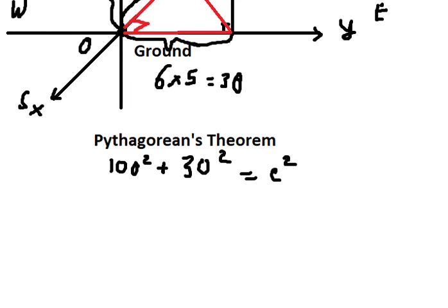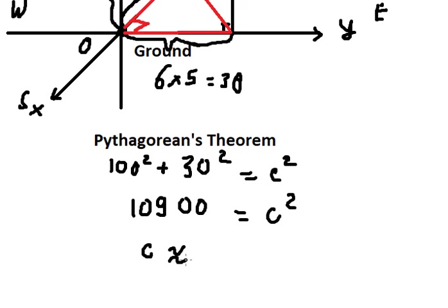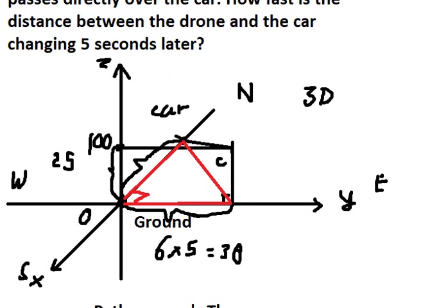We calculate: that is about 10,900. We put the square root on both sides and that is about 104.40. Now we consider the next step — highlighting the ring color. We have one right triangle going in 3D.